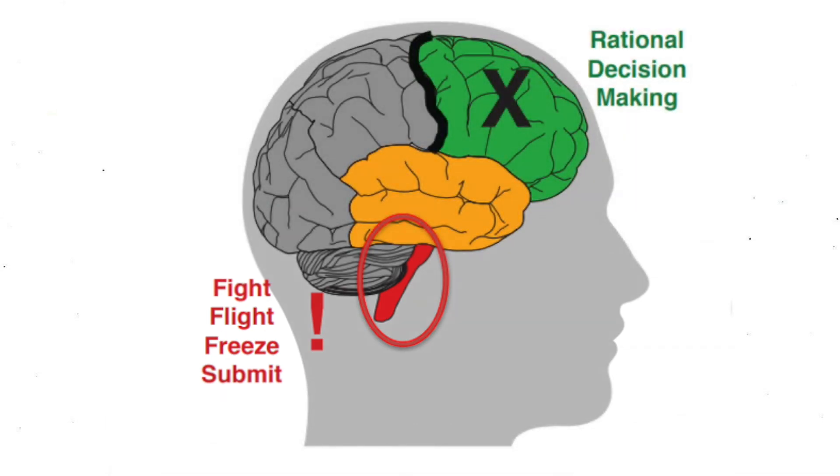In times of danger or threat, these three regions of the brain respond in a sequential manner. Let's use an example. Say you're walking down a path and you notice something that looks like a snake. Instantly, the amygdala in your emotional brain senses danger and alerts the survival brain. Because the thinking brain is slow in processing dangerous situations, your survival brain shuts down your thinking brain and takes control of your body. When this happens, you would experience three possible survival responses: fight, flight, or freeze.